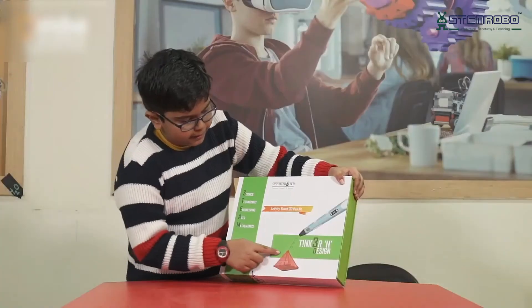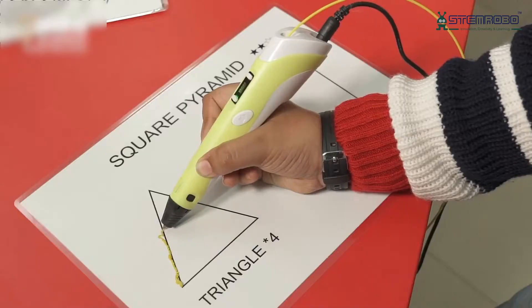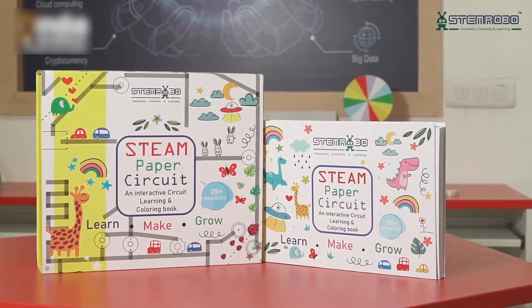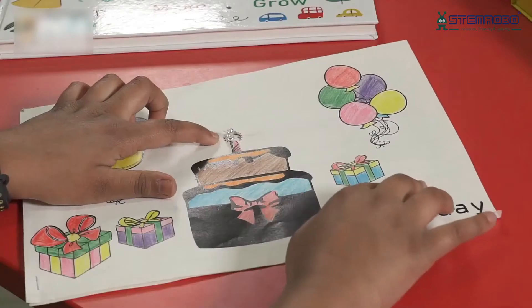The Tinkering Design kit opens doors to 3D modeling, while the Paper Circuit kit beautifully blends arts and electronics, fostering STREAM understanding.